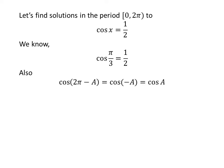We know the value of cosine of x repeats after the interval of 2 times pi, so cosine of 2 times pi minus a is equal to cosine of a. We also know the famous trigonometry identity cosine of minus a is equal to cosine of a.